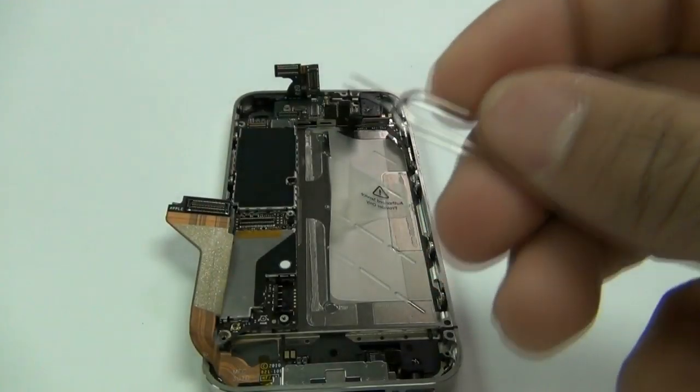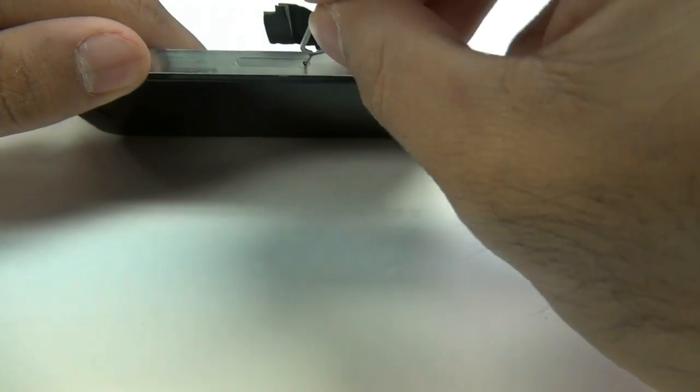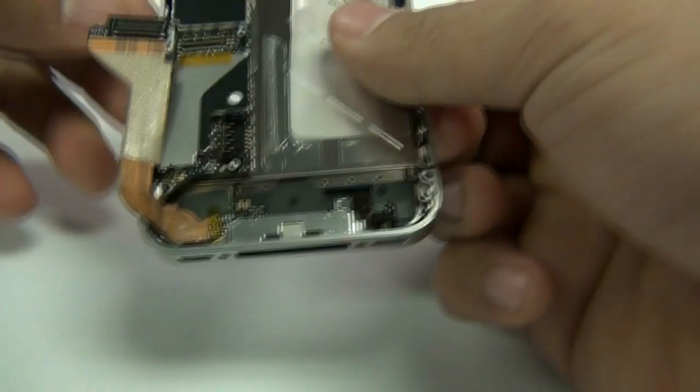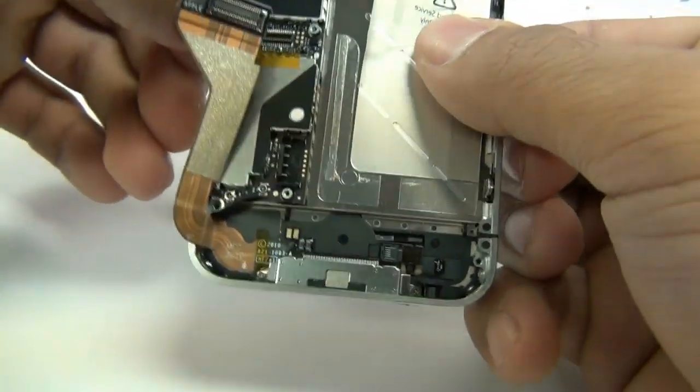Using a SIM tray ejector tool, which you can find at injuredgadgets.com, you want to release your SIM tray. If you do not release the SIM tray, the logic board will not come out of the phone.